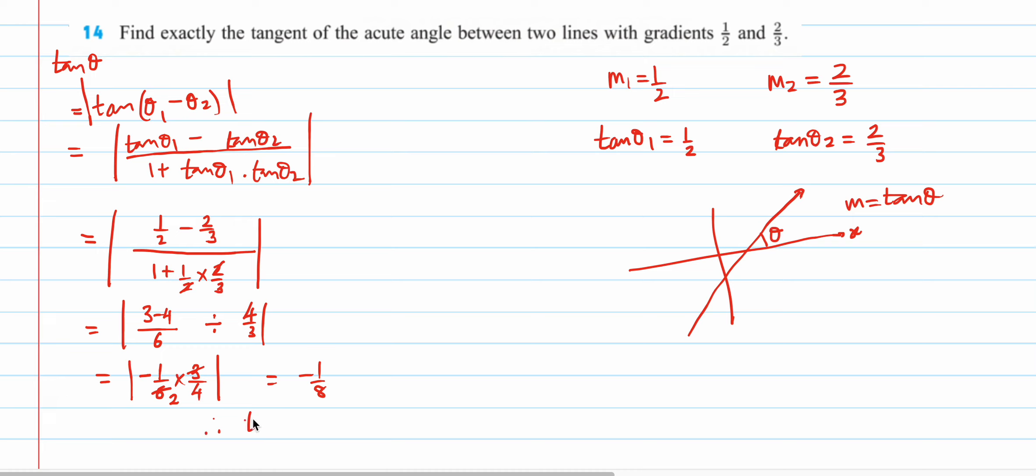So, what's your theta? So, tan theta is what? If you want an acute angle, basically, you just drop the minus sign. So, tan theta is one by eight. I solved it. I got one. Thank you.